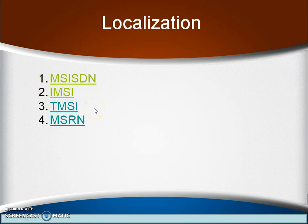The next number is TMSI — Temporary Mobile Subscriber Identity. As its name suggests, it works the same as IMSI, but to hide the IMSI for security reasons the TMSI is temporarily assigned by the VLR. The next number is MSRN — Mobile Station Roaming Number — also used for security reasons to hide the location of the dialed subscriber. The MSRN number is assigned by the VLR database temporarily.